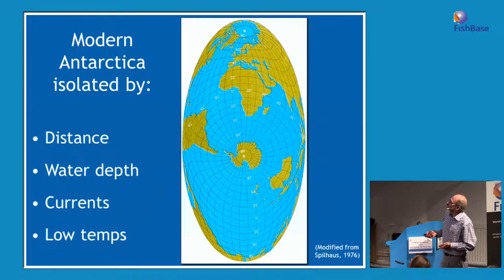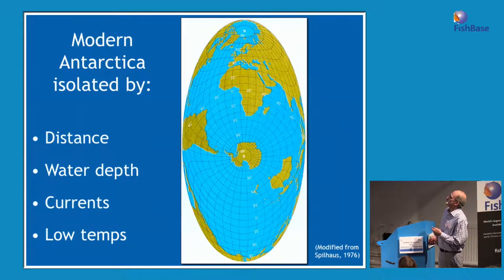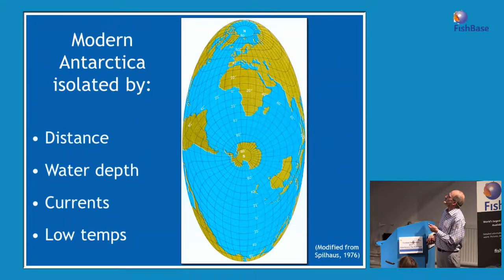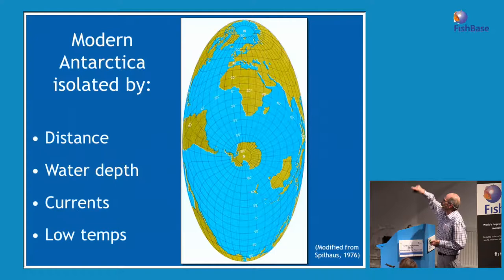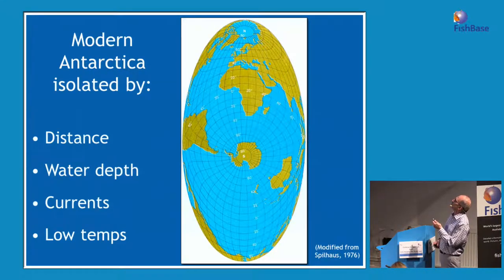This is a unique view of Antarctica that emphasizes the thing that makes it different from the Arctic: it's isolated. It's isolated by a variety of things — just distance, water depth of 3,000 to 5,000 meters, the currents that pattern clockwise around the continent, and low temperatures. It's completely opposite of the Arctic, where you have open communication with the North Atlantic and North Pacific.